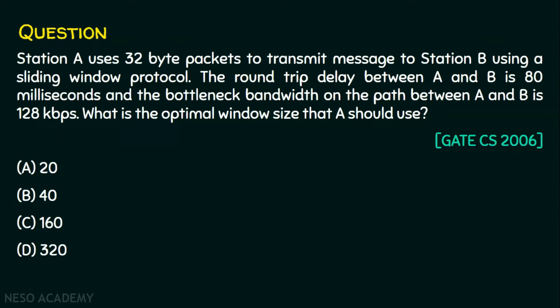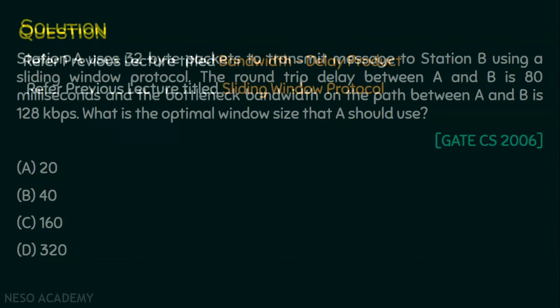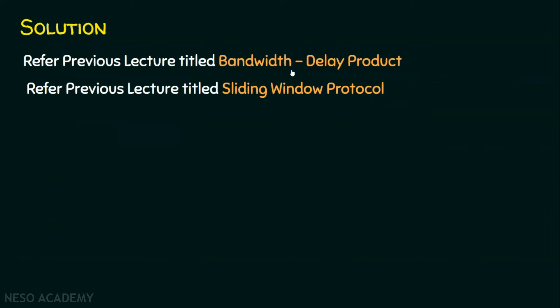Before solving this problem, I request you to watch my previous lecture titled 'The Bandwidth-Delay Product and Sliding Window Protocol.' Those two lectures will give you a basic understanding of what the capacity of the channel is — that is, the bandwidth-delay product — and what window size means in sliding window protocol.